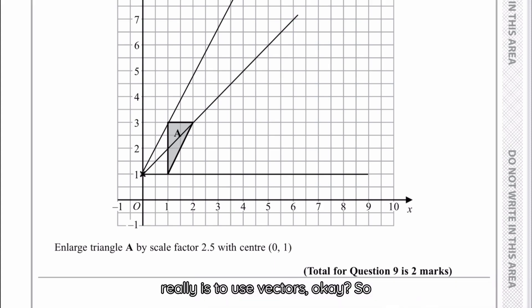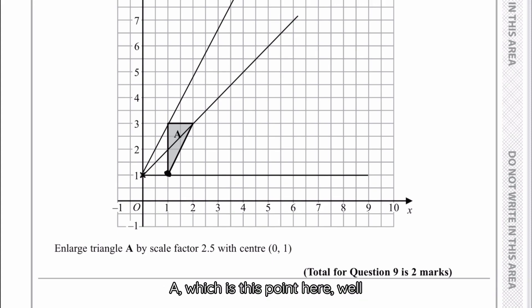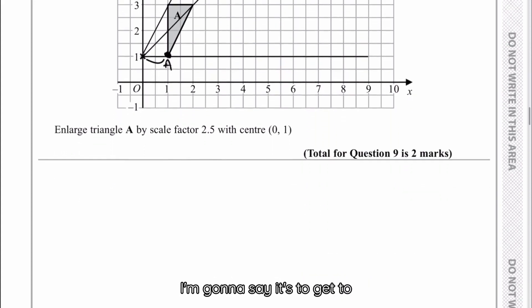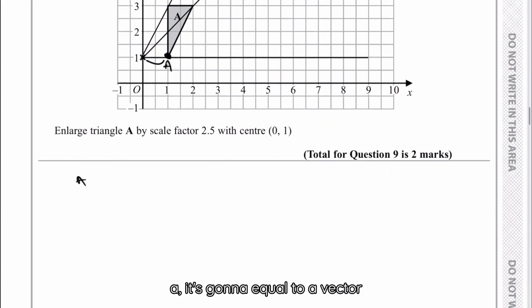The way to do this properly is to use vectors. The first vector I'm going to say is if I look at point A, which is this point here. In order to get to A from (0,1), I've gone along one jump and I haven't gone anywhere along the y-axis. So let's have a look at that.